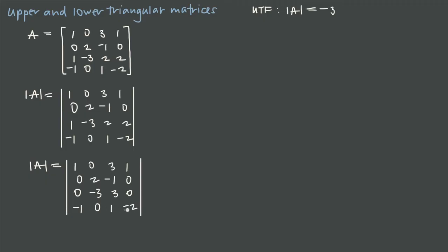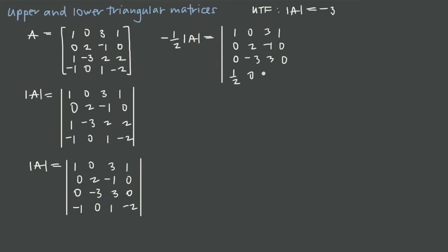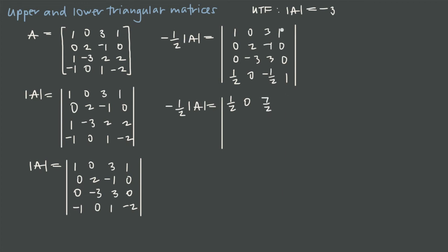Now we multiply row 4 by −1/2, which requires multiplying the determinant by −1/2 as well. Row 4 becomes: 1/2, 0, −1/2, 1. We then subtract row 4 from row 1 to zero out the entry in position 1,4: 1−(1/2)=1/2, 0−0=0, 3−(−1/2)=7/2, 1−1=0. So the updated row 1 is: 1/2, 0, 7/2, 0.